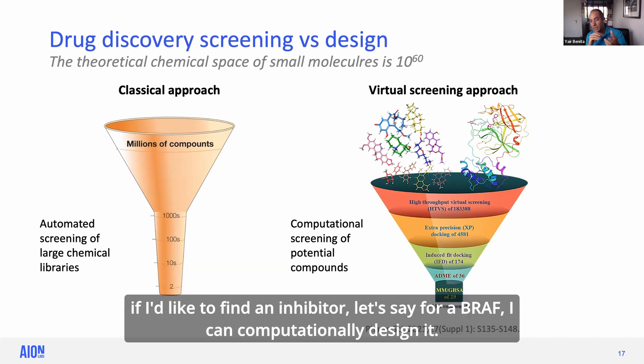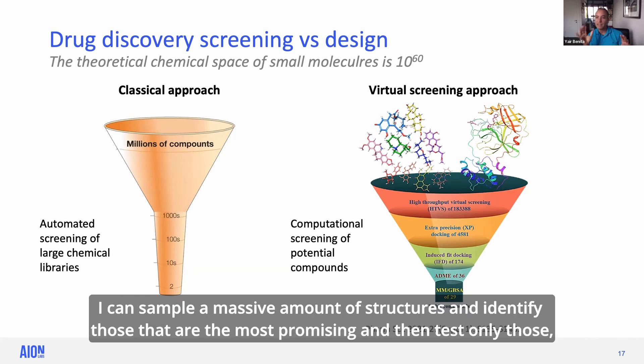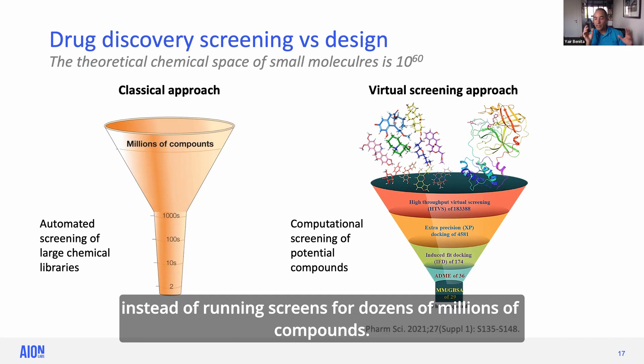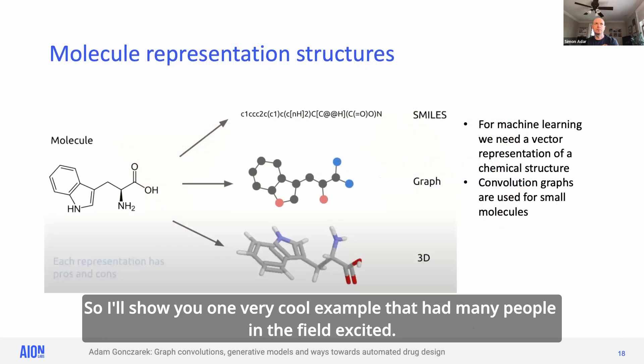If I'd like to find an inhibitor, let's say for a BRAF, I can computationally design it. I can sample a massive amount of structures and identify those that are the most promising and then test only those instead of running screens for dozens of millions of compounds. So I'll show you one very cool example that had many people in the field excited.